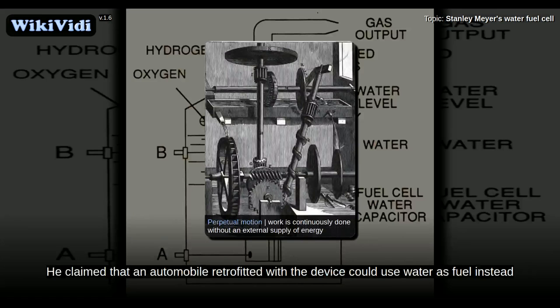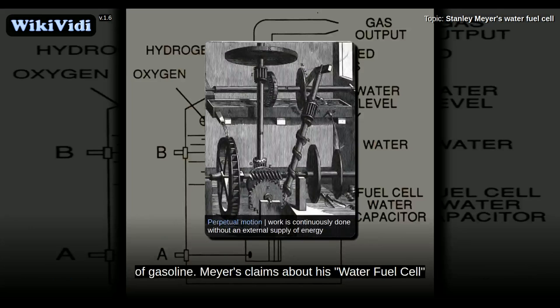He claimed that an automobile retrofitted with the device could use water as fuel instead of gasoline. Meyer's claims about his water fuel cell and the car that it powered were found to be fraudulent by an Ohio court in 1996.